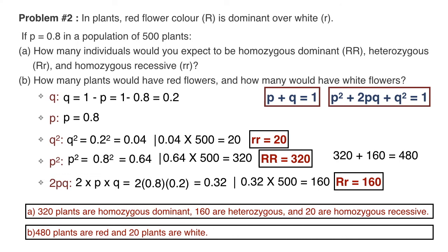And that's it. Hardy-Weinberg questions may ask for any of the allele frequencies, any of the genotype frequencies, the number of individuals with a particular genotype, or even the phenotype frequencies. But if you start by organizing all variables and begin with the information given in the problem, you can work through any type of Hardy-Weinberg problem. Good luck, and I'll talk to you soon.